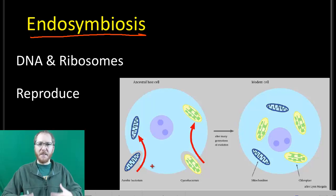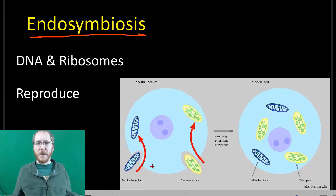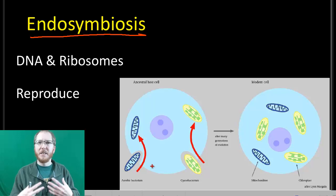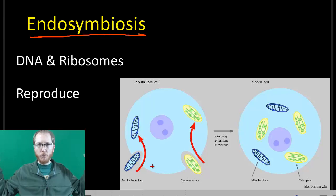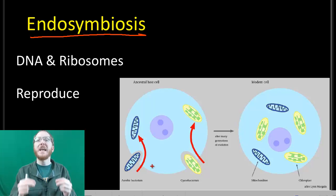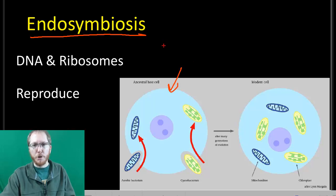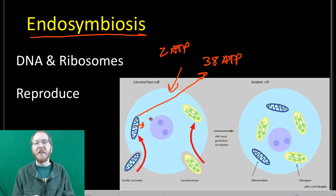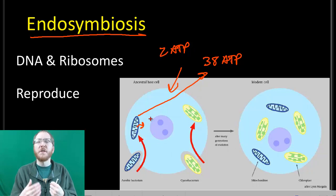This prokaryote could make ATP very efficiently, with proteins and enzymes embedded in its membrane and cytoplasm. The host cell surrounded it with its own membrane — gave it the hug of death and brought it in — but forgot to eat it. As the two lived together, the ingested prokaryote took food from the host cell and broke it down, producing far more ATP than the host could alone. The original host cell could make about 2 ATP per sugar, whereas this new prokaryote could make about 38 ATP per sugar. Even donating half — 19 ATP — was way more than the host ever would have gotten on its own.